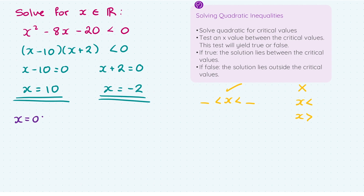And how do I do this test? I sub that x value into the original question. So I'm going to go 0² - 8(0) - 20, and see is that less than 0? I get minus 20 is less than 0. I have to say, is that statement true or false? Is minus 20 less than 0? It is true.